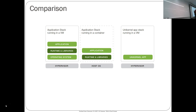Here's a comparison of all three: virtual machine on the left — application, runtime, OS on top of a hypervisor; container in the middle — application and runtime libraries on a container-enabled OS; and the unikernel on the right — just the app running in a single process address space on a hypervisor.